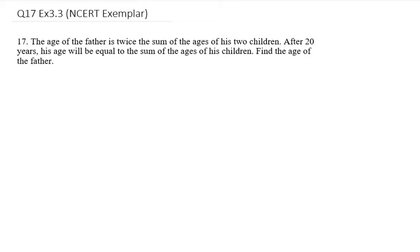Hello everyone, let's start with question number 17. It says the age of the father is twice the sum of the ages of his two children. So there are two things: father and sum of the ages of his two children.